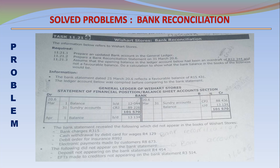11.21.3 Assume that the opening balance in the General Ledger account below had been an overdraft of 12,344 and not a favorable balance. Do a calculation to determine what the bank balance in the books of the business would be. The bank account statement dated 25th March reflects a favorable balance of 15,431.